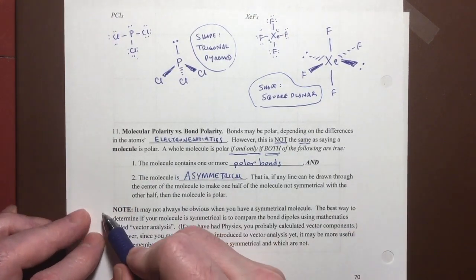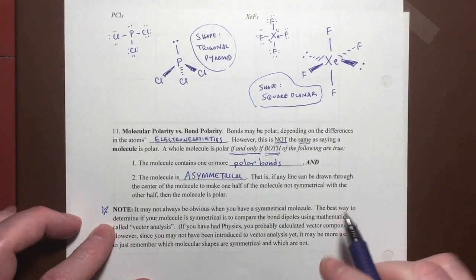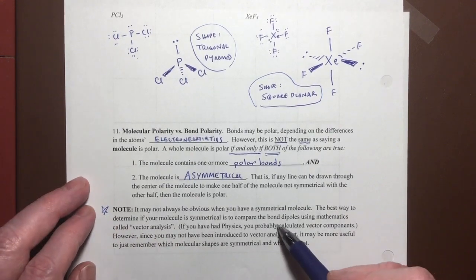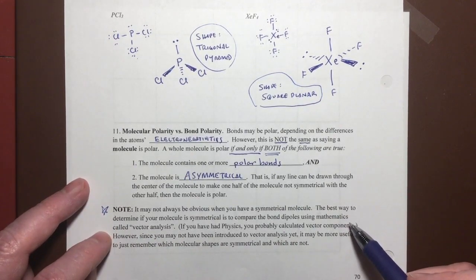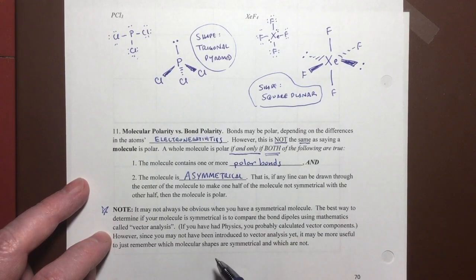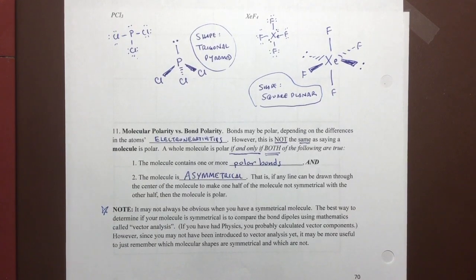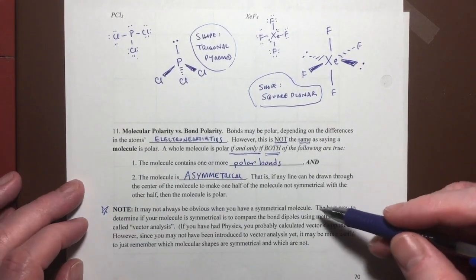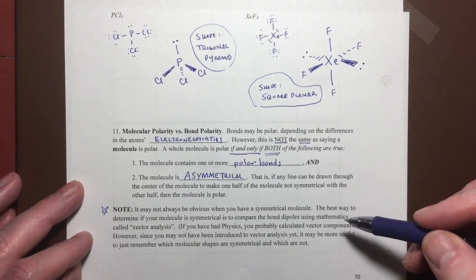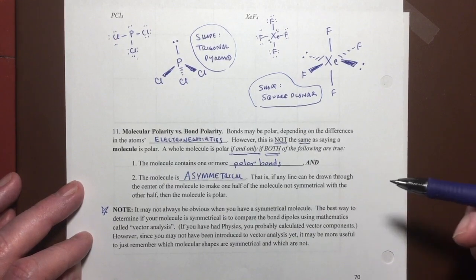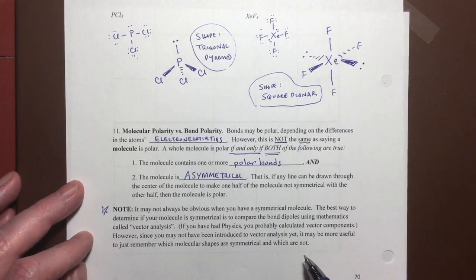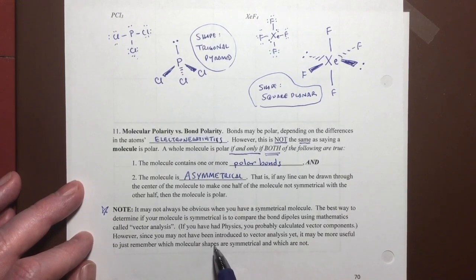Here's an important note: it may not always be obvious when you have a symmetrical or asymmetrical molecule. The best way to determine if a molecule is symmetrical is to compare all the bond dipoles using vector analysis. If you've had physics, you've probably done vector addition, in which case you would add up all the bond polarity vectors and see if there is an overall net vector. If not, it may just be more useful to remember which shapes are symmetrical and which are not — and that's what we're going to do here.